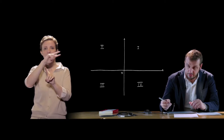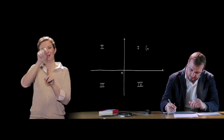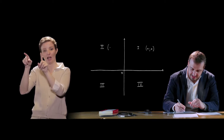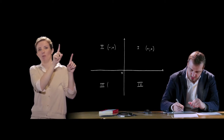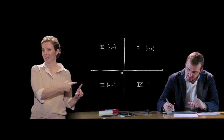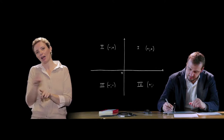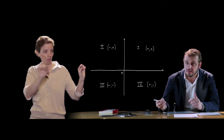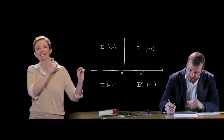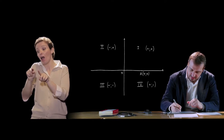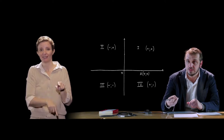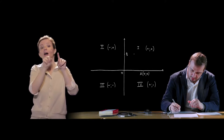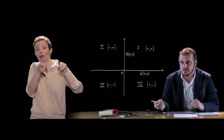I quadranti sono caratterizzati dall'avere, come coppie ordinate: il primo quadrante ascissa positiva e ordinata positiva; il secondo quadrante ascissa negativa e ordinata positiva; il terzo quadrante entrambe le coordinate negative; e il quarto quadrante ascissa positiva e ordinata negativa. I punti che giacciono sull'asse delle x hanno tutti ordinata nulla — ad esempio il punto A avrà ascissa x e ordinata 0 — mentre quelli sull'asse delle y avranno ascissa nulla, ad esempio il punto B avrà ordinata y e ascissa pari a 0.